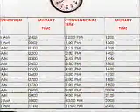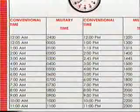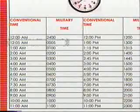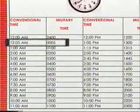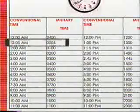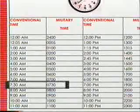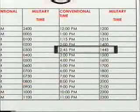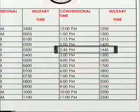The last two digits indicate the minutes of each hour, from 01 to 59. Thus, 0005 military time would be 5 minutes after 12 midnight, 0730 military time would be 30 minutes after 7 a.m., and 1445 military time would be 2:45 p.m.